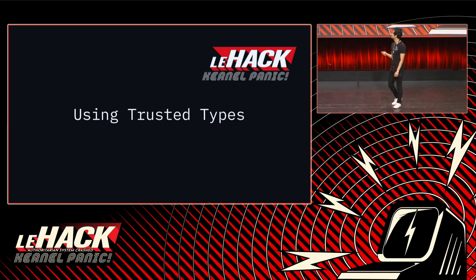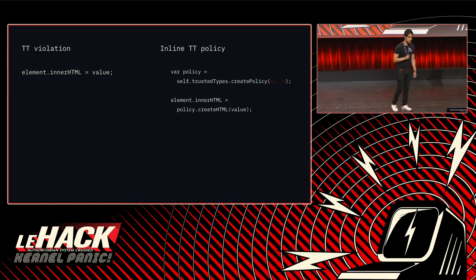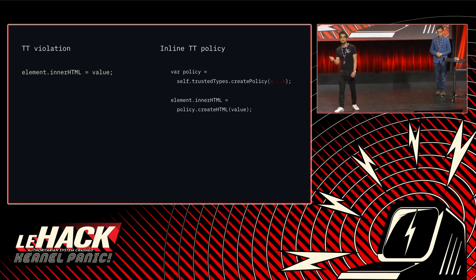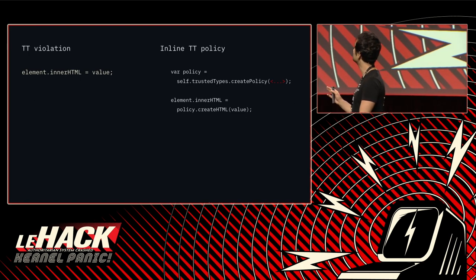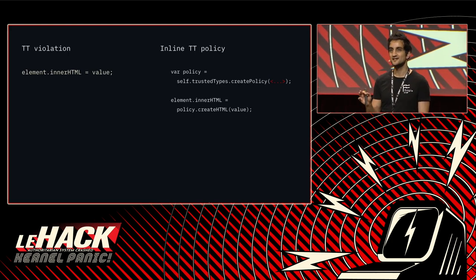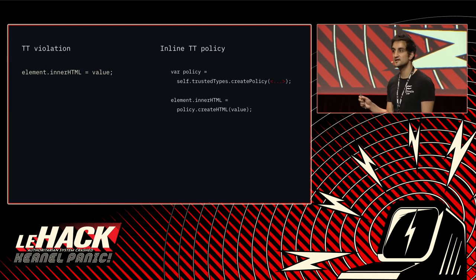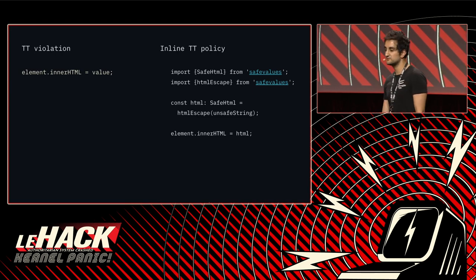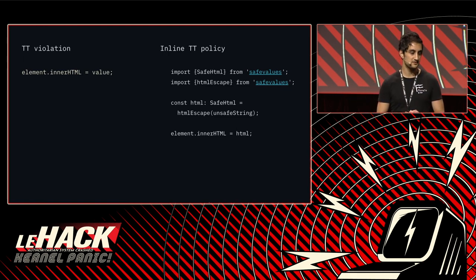Now you might wonder: what if you actually want to use these DOM sink APIs, or what if you have a lot of them already in place in your existing products? That's where Trusted Types policies come in. The goal of a trusted policy is to allow a specific input — say, an innerHTML call — to be inserted into the DOM even though Trusted Types is enforced. You use Trusted Types APIs to mark it as a safe value. We recommend checking that the value can't be exploited for XSS, and sanitizing it if needed. Most of the time we recommend using our in-house safe value library, which is a wrapper around these inline policy APIs.